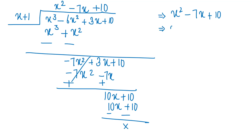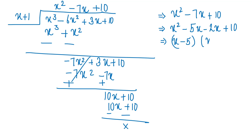Let's split the quadratic x² minus 7x plus 10 quickly to get the two remaining zeros of the cubic equation. Finally, I have three roots of the cubic equation: minus 1, 2, and 5.